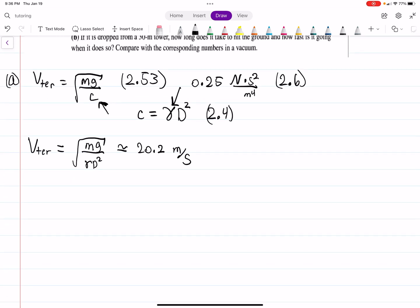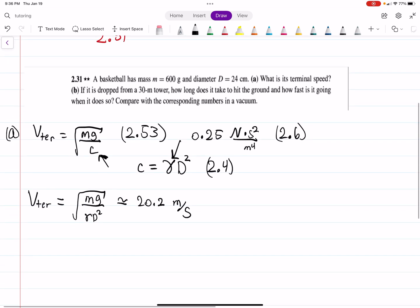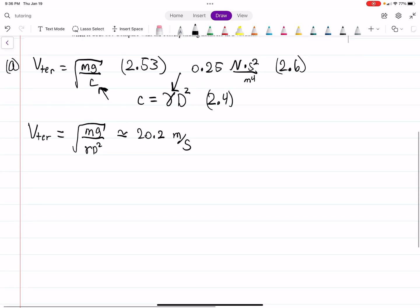Okay, so that is your terminal speed. And then part B, so part B says, if it's dropped from a 30-meter tower, how long does it take to hit the ground? How fast is it going when it does so? Okay, so I'm not going to compare it with the vacuum, but you could do that with just physics one stuff, basically.